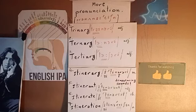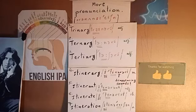Now the second group consists of four words that start with the letter I. The first word is itinerary, the second is itinerant, the third is itinerate as a verb, and the last word is the noun itineration.